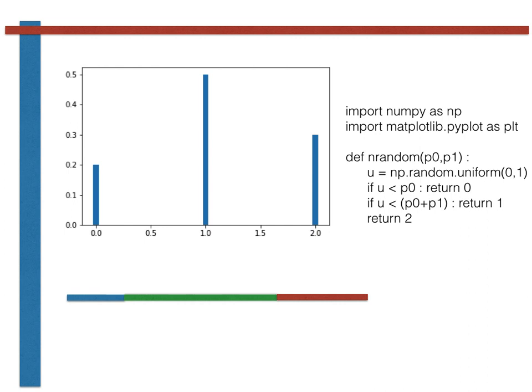As shown in the code on the right hand side of the slide here, the value of the multinomial random variable is set equal to 0 if the uniform random variable falls within the blue segment of the line. If the uniform random variable falls within the green segment of the line by contrast, the multinomial random variable is set equal to 1. Lastly, if the uniform random variable falls into the red segment of the line, the multinomial random variable is set equal to 2.